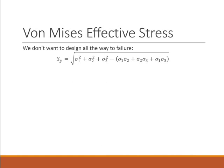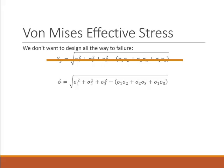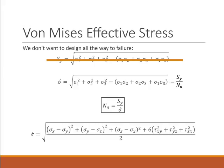The problem is we don't really want to design all the way until failure. So instead of using the failure equation directly, we're going to define a von Mises effective stress, and set it equal to the yield strength divided by a safety factor for normal stresses. The von Mises effective stress can also be written in terms of x, y, and z stresses with tau x,y — a six-component stress state — instead of having to first reduce it to the three principal stresses.